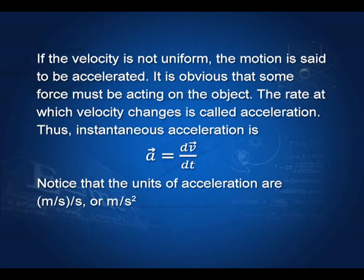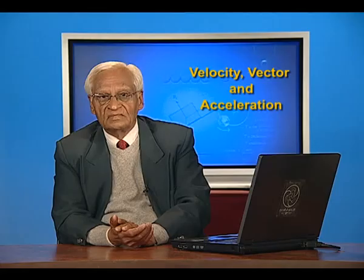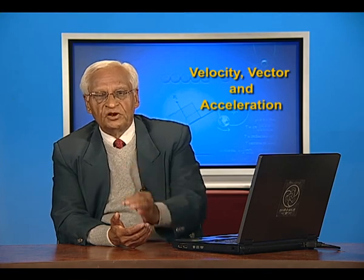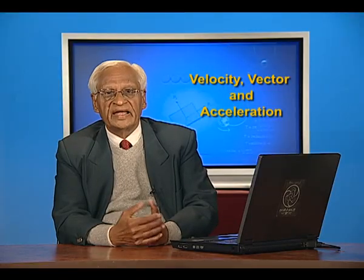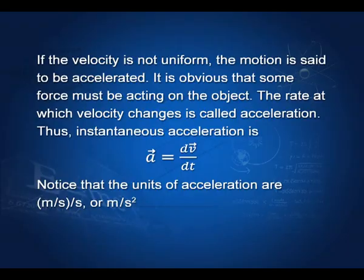So vector A is equal to dv vector divided by dt — it is the rate of change of the velocity vector. Acceleration is the rate of change of velocity vector. What are the units of acceleration? It is the rate of change of velocity, so m/s divided again by s — it is m divided by s squared. So the units are meters per second squared, or m·s⁻².